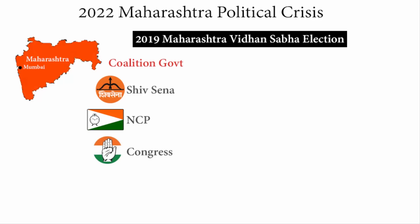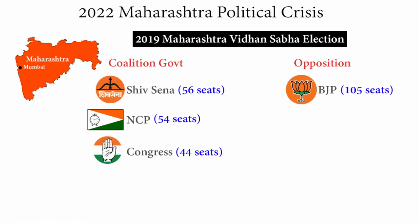In the 2019 Maharashtra state assembly election, Shiv Sena won 56 seats, NCP won 54, Congress party won 44, and BJP won 105 seats. If you notice, BJP is the only single political party that had the most number of seats in the 2019 Maharashtra assembly election.